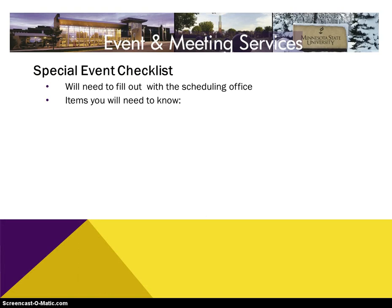One of the things that Event and Meeting Services will ask you to do — and it's an extremely important part of the process — is to fill out the special events checklist. This checklist is a comprehensive list of everything you'll need from services to items at your event, and you need to fill it out in the scheduling office or online. Some things you will need to know are the outdoor music policy: at Minnesota State University Mankato, you can only have amplified sound between the hours of 11 a.m. and 1 a.m. so it does not disrupt class operations. We are a dry campus, so you cannot have alcohol at events unless you get prior approval from the president. If you do want to have a catered third-party vendor with the appropriate assurance serve alcohol at your event, stop into Event and Meeting Services and they'll fill you in on how to do that — there is a process you have to fill out.